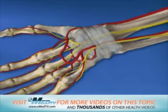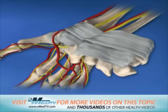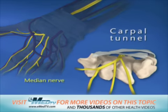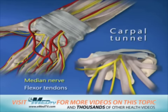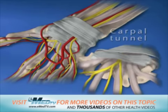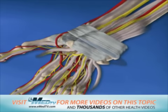The carpal tunnel is a confined space or tunnel in the wrist. One of the nerves to the hand, called the median nerve, and several tendons, called flexor tendons, pass through the carpal tunnel. The carpal tunnel is on the palm side of the wrist. We will discuss the carpal tunnel again later.